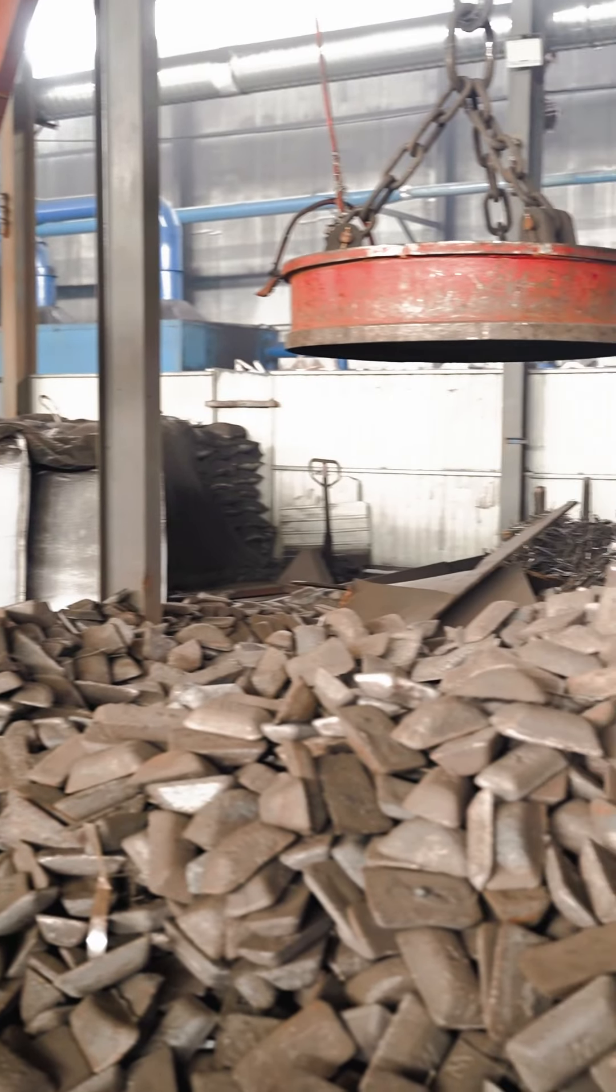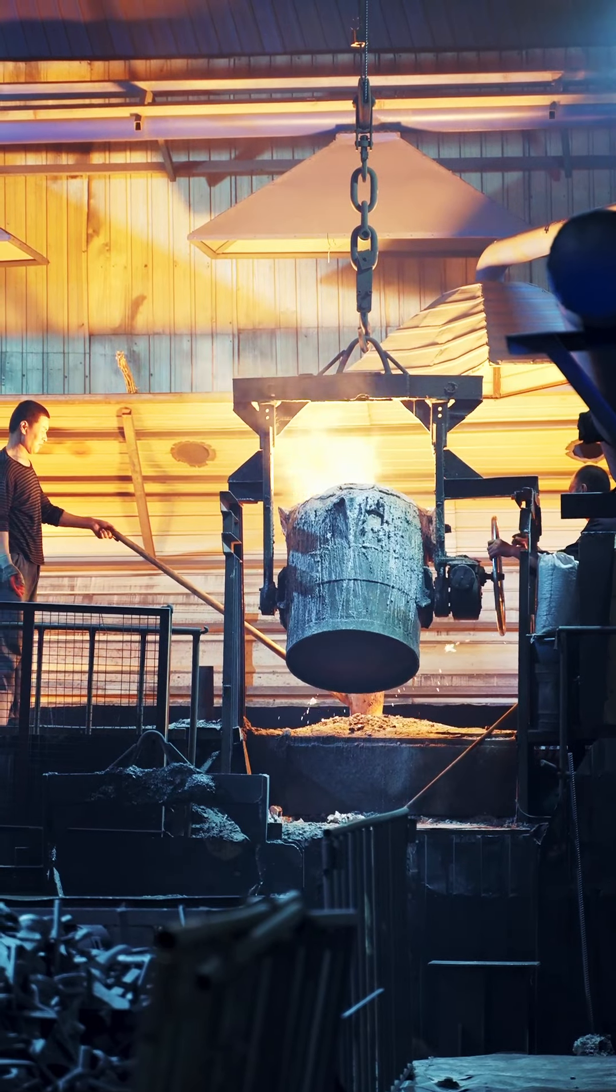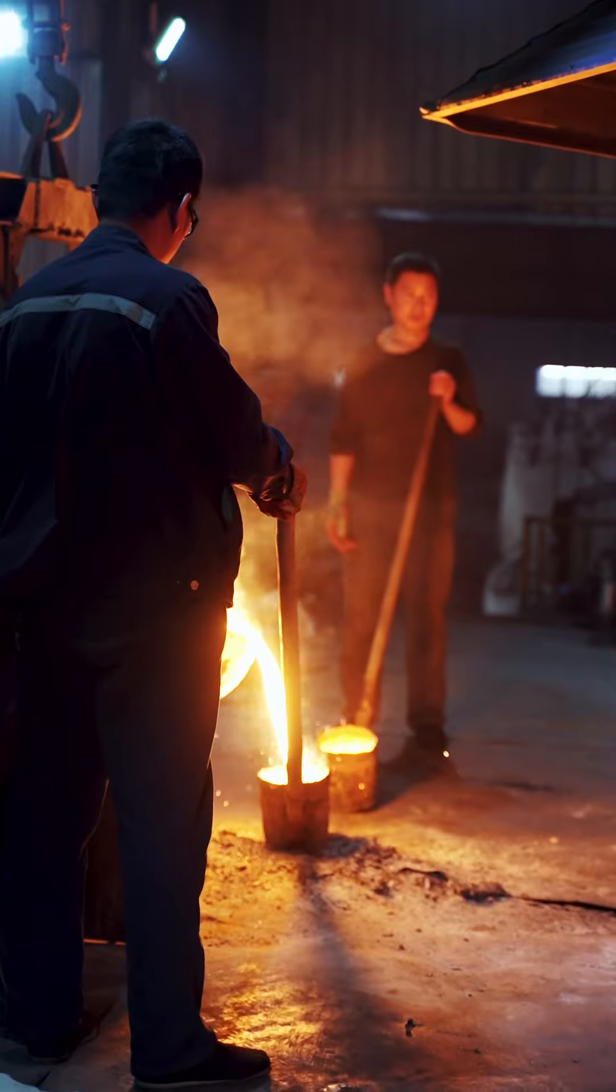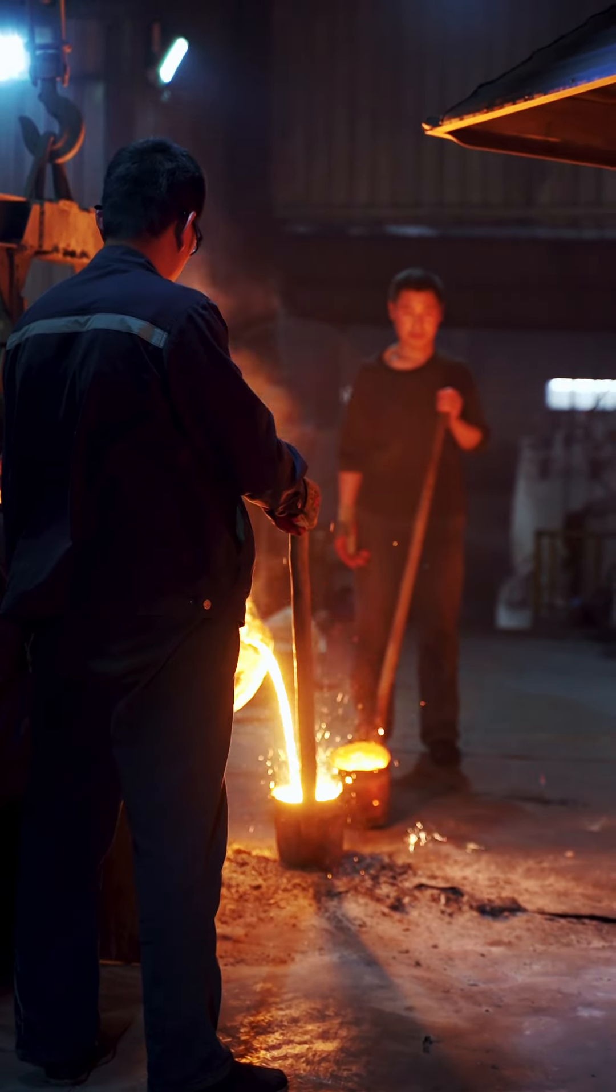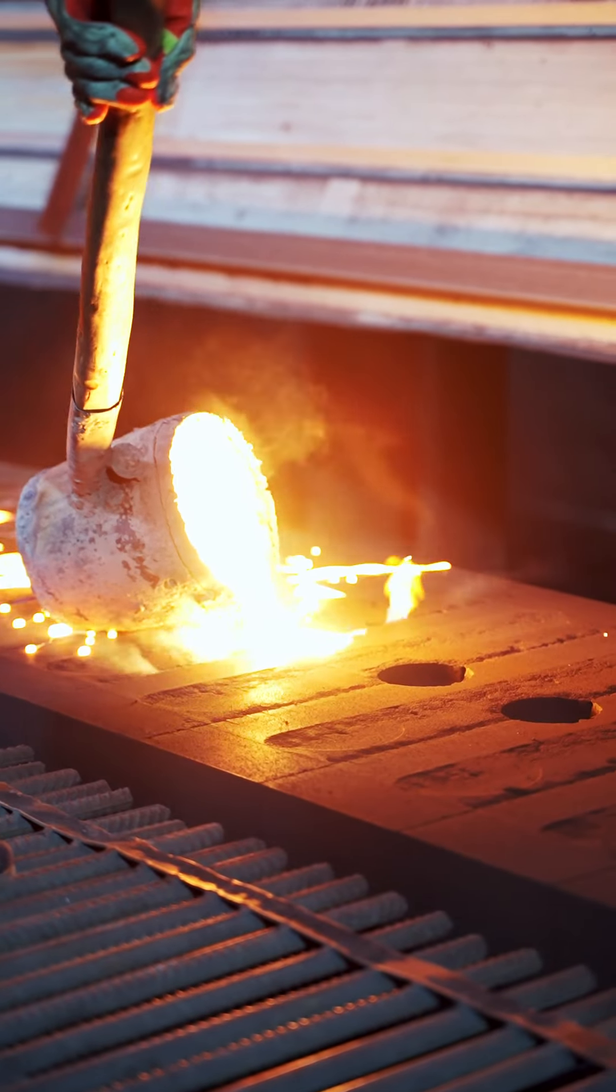Firstly, you need to understand their makeup. Cast iron is 98% iron and 2% carbon. It's made by pouring molten iron into sand molds, then cooled and hardened.